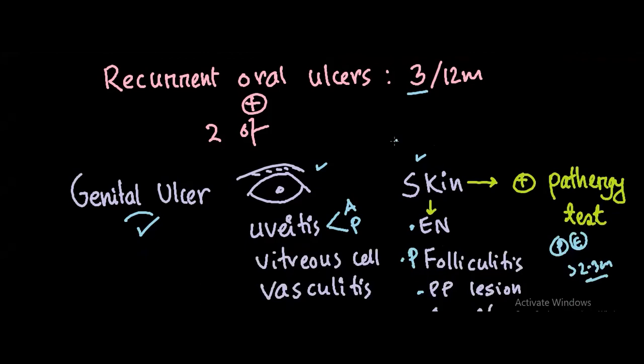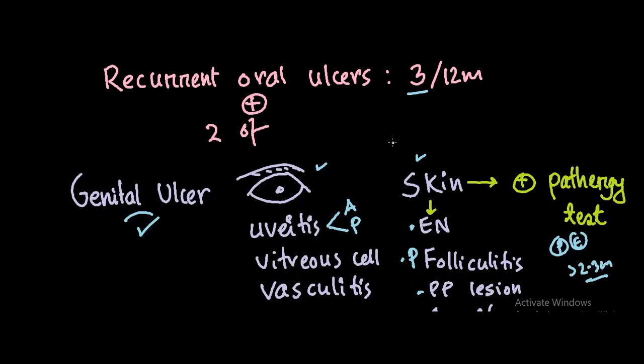Along with this, you must have two other criteria. The criteria are from the genital area, eyes, and skin. For genital: recurrent genital ulcer.